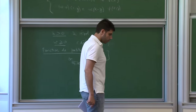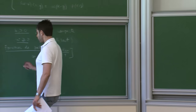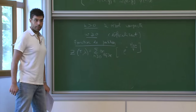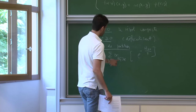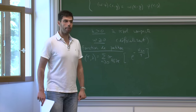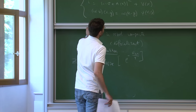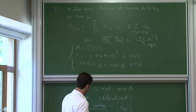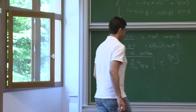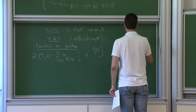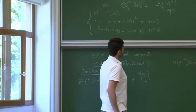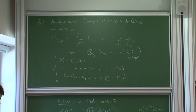On va regarder le cas grand canonique, où on fait une moyenne sur tous les nombres de particules possibles. Donc la fonction de partition Z(T,λ) va être la somme sur tous les n de ça. Quand n vaut 0, la constante c'est 1 par convention. Pour n égal à 1, il n'y a pas d'interaction, c'est juste l'opérateur petit h. La bonne hypothèse c'est de demander que exponentielle moins H soit un opérateur à trace — c'est vrai pour le Laplacien sur n'importe quel domaine borné.